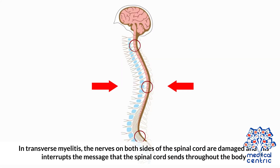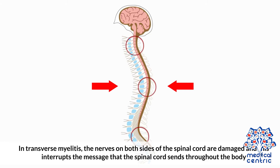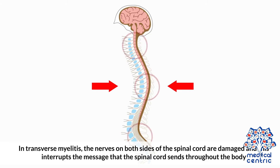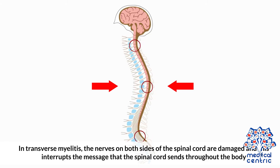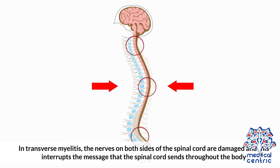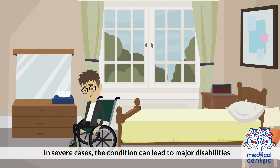In transverse myelitis, the nerves on both sides of the spinal cord are damaged, and this interrupts the messages that the spinal cord sends throughout the body. In severe cases, the condition can lead to major disabilities.